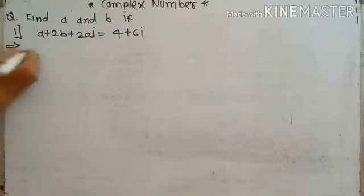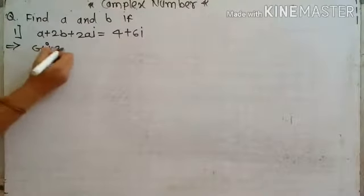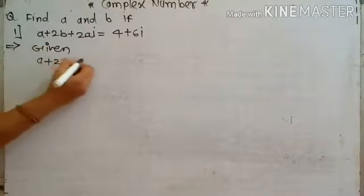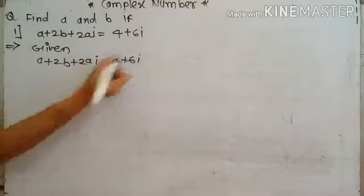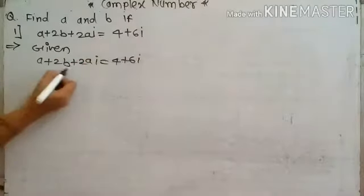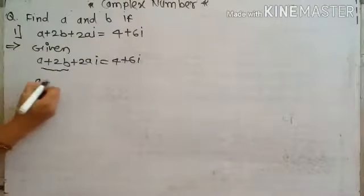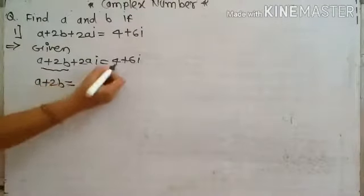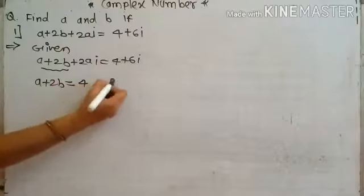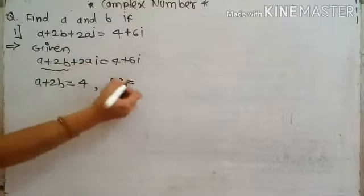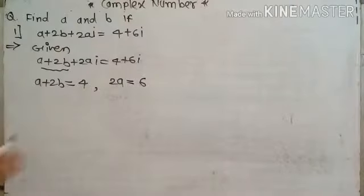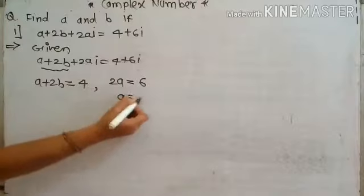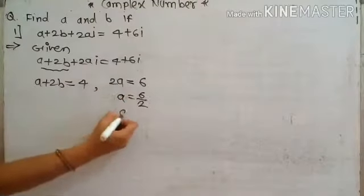Given: a plus 2b plus 2ai is equal to 4 plus 6i. We compare: the real part a plus 2b is equal to 4, and the imaginary part 2a is equal to 6. From the second equation, a is equal to 6 divided by 2, that is a is equal to 3.